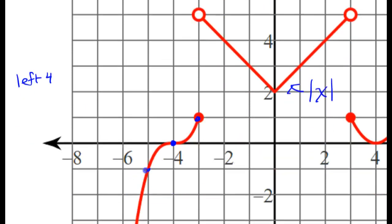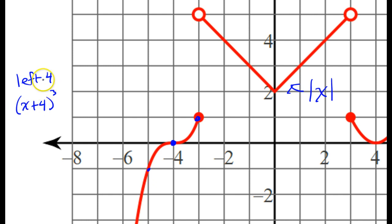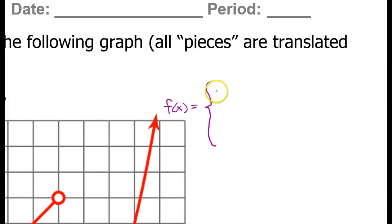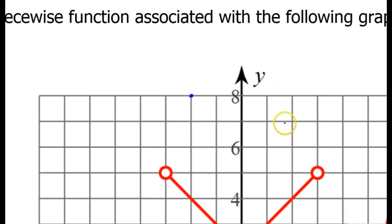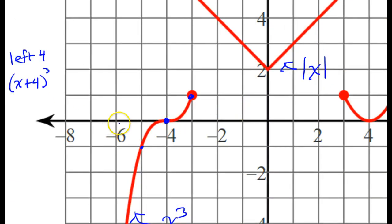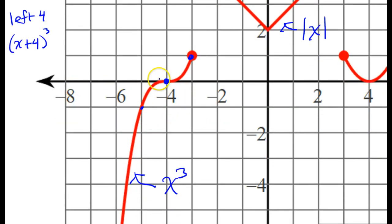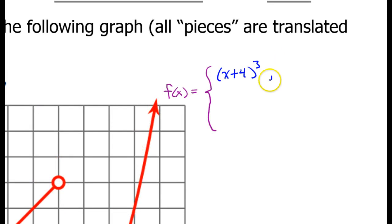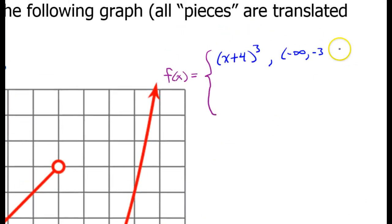So the equation for this function is going to be (x + 4) cubed, because that would be the left 4. That's what I'm going to put for this piece of the piecewise function: (x + 4)³. Now I need to put the domain of this piece. In interval notation, this would be negative infinity to negative 3. That's a closed circle, so I'm going to put a bracket: [−∞, −3]. I also could have said x is less than or equal to negative 3 — that would be the same thing.